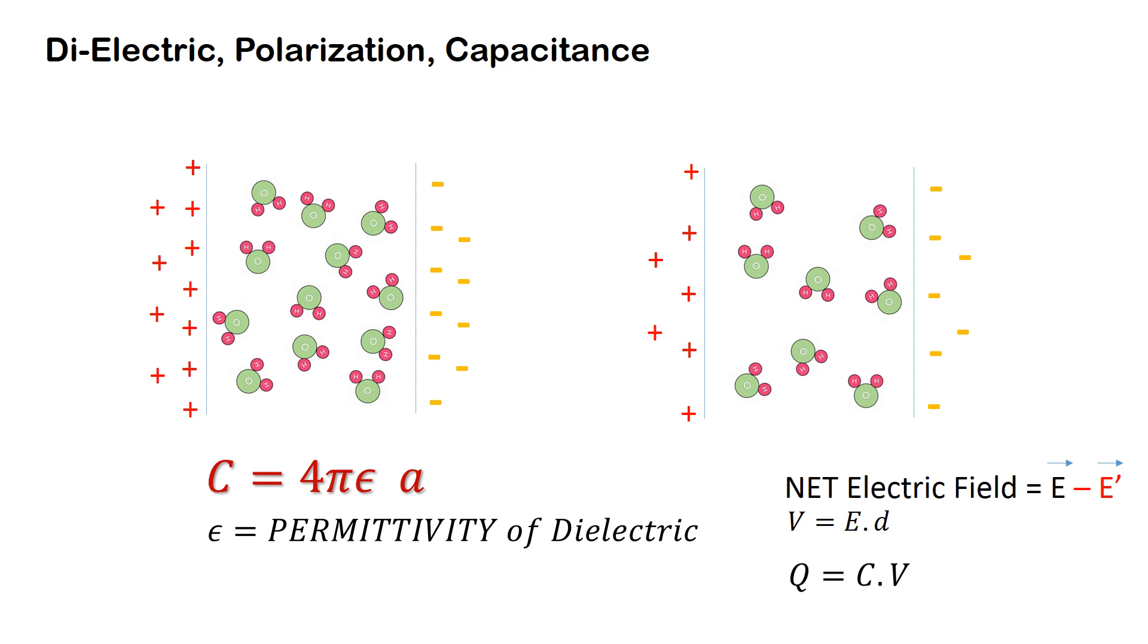So the capacitance of a capacitor depends upon the dielectric medium, and this property of the dielectric medium is referred to as the permittivity of the dielectric medium. I hope you found this useful. Thanks for watching.